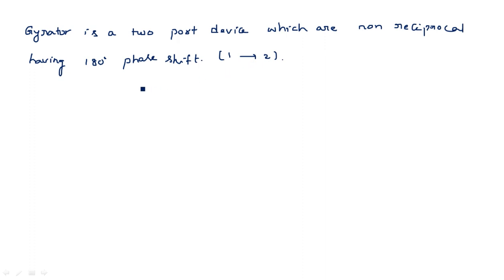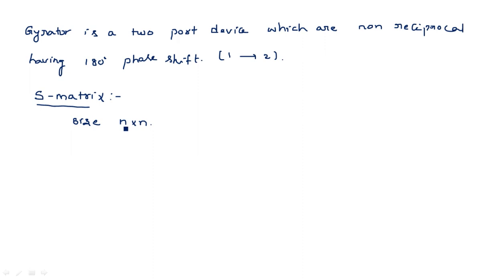Now let us see how the scattering matrix parameters are going to be evaluated for this gyrator. The S-matrix is a square matrix of size n by n, where n is the number of ports. The gyrator has two ports, so the size of the S-matrix for the gyrator is 2 by 2.